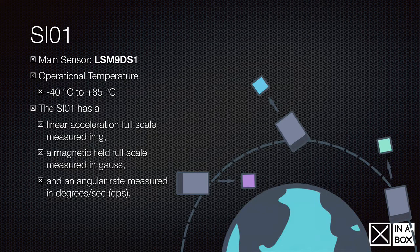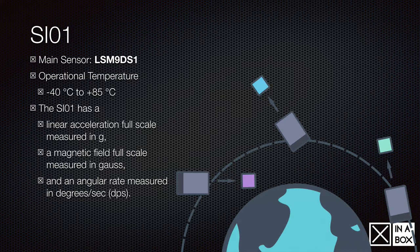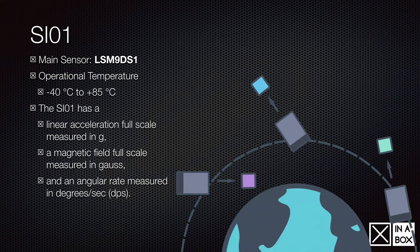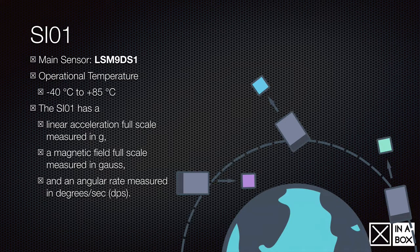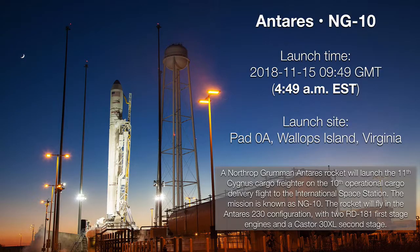That sensor is called the SI01. It's based on the LSM9DS1 and it measures acceleration in G. It measures the magnetic field in Gauss and the gyroscope measures the angular rate in degrees per second.